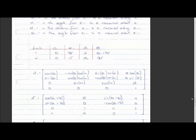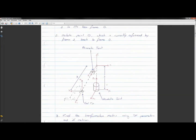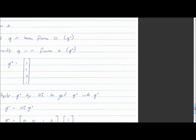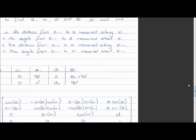Now for α_i: it's the angle from z_{i-1} to z_i measured about the x_i axis. For link one, that's from z_0 to z_1 measured about x_1 — how much do we need to rotate about x_1 to get z_0 pointing in the same direction as z_1? Using the right-hand rule, we need to rotate positive 90 degrees, so α_1 = 90°.